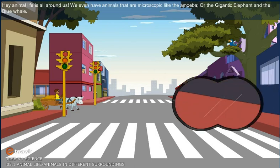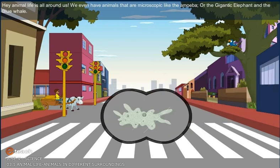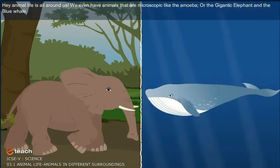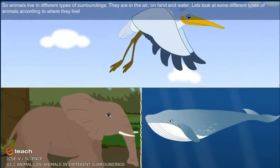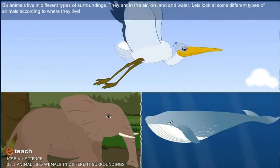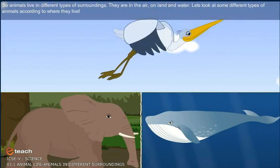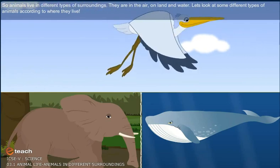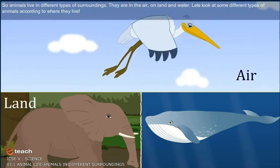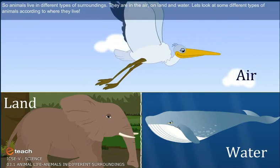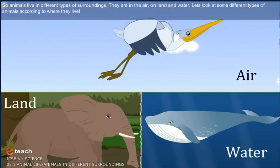Animal life is all around us. We even have animals that are microscopic like the amoeba, or the gigantic elephant and the blue whale. Animals live in different types of surroundings — they are in the air, on land, and in water. Let's look at some different types of animals according to where they live.